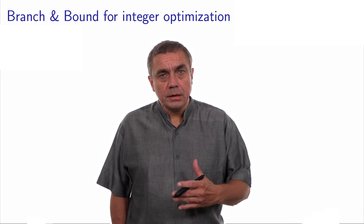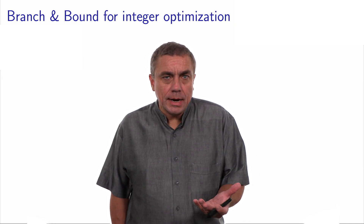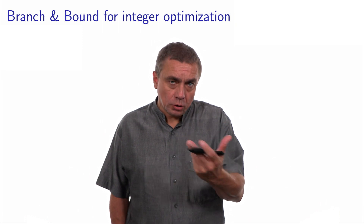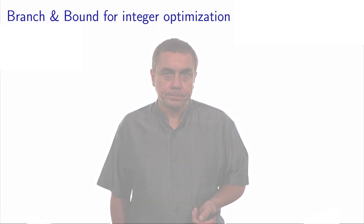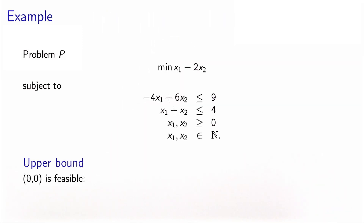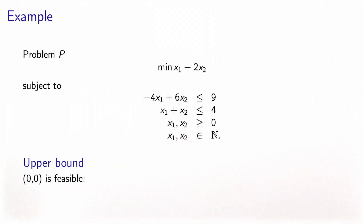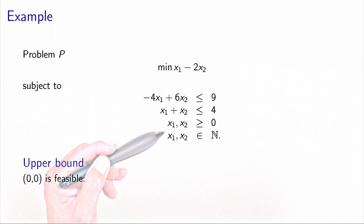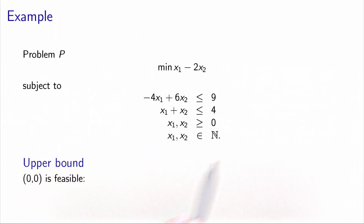In this video, we illustrate the idea of the branch and bound algorithm in the context of integer optimization. Let's consider this example. We have to solve a problem that we call P, which minimizes a function with two variables, x1 and x2. We have two inequality constraints. The two variables must be non-negative and they must be integer.